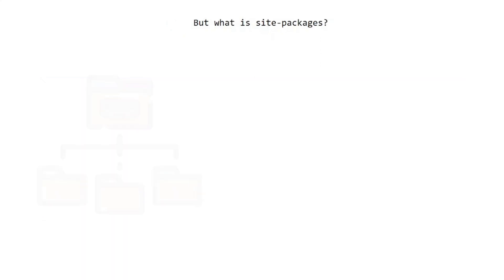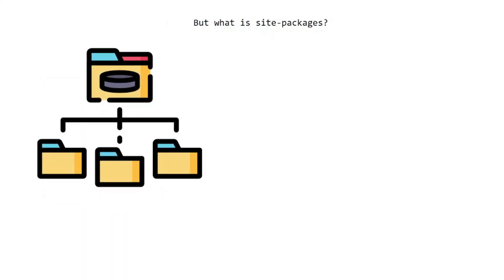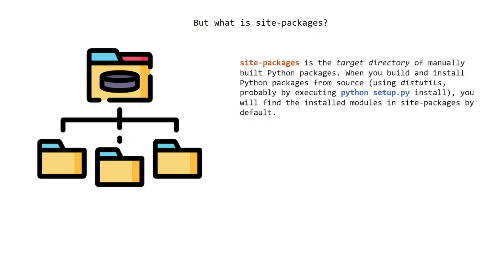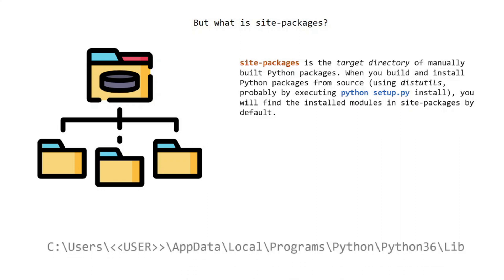But what is site-packages? Site-packages is the target directory for manually built Python packages. When you build and install Python packages from source using distutils — probably by executing 'python setup.py install' — you will find the installed modules in site-packages by default.